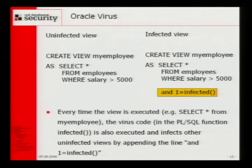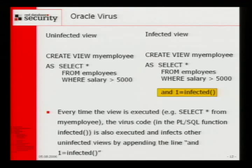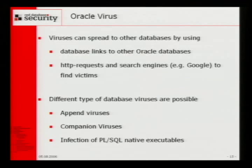Here's a proof of concept. On the left side we have the view — my employee selects from employees for salary bigger than 5,000. On the right side we are appending a PLSQL function. Every time you run a select from the now infected view, this function is executed, and it looks for new uninfected views. Via database links we can connect to other databases, and we can do HTTP requests from the database — for example to Google. I was able to implement six or seven different concepts of database viruses.